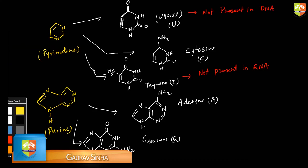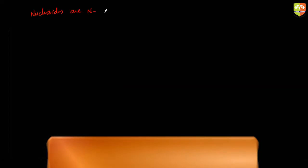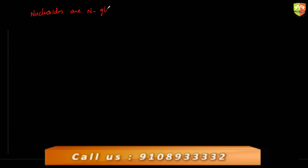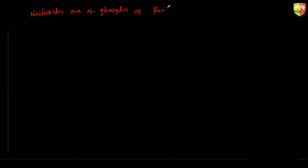Write down the next point. I will draw the structure so you will understand. Nucleosides are N-glycosides, which are sites of purine or pyrimidine bases with a pentose sugar. So this is the definition of nucleoside.